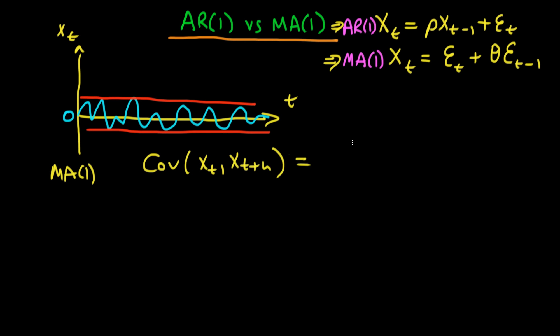if we had h equal to 1, we knew that this was equal to θσ². If h was greater than 1, we found that the covariance was equal to 0. So we had this type of covariance structure.